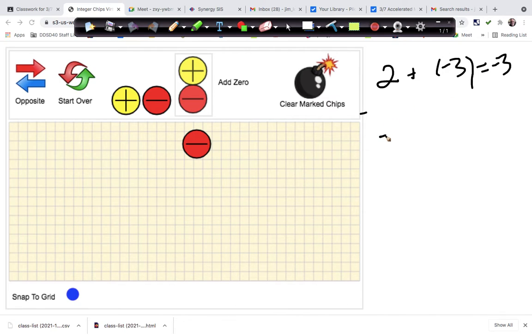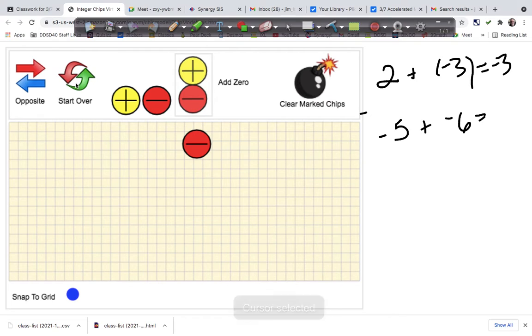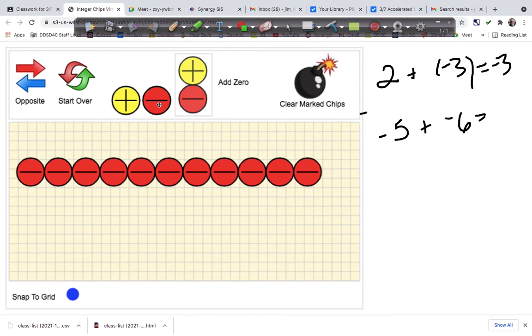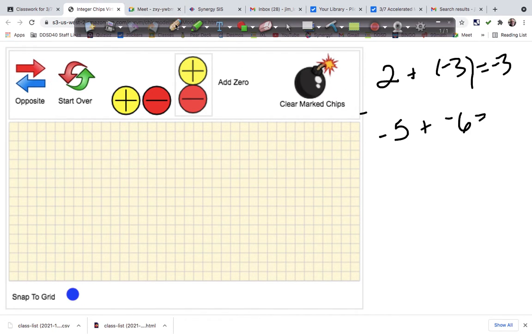Or negative 5 plus a negative 6. That would look something like this. Let's hit start over and this just says put up five negatives and then six more negatives. And we have a total of 11. So let's start that over. So that was negative 11.